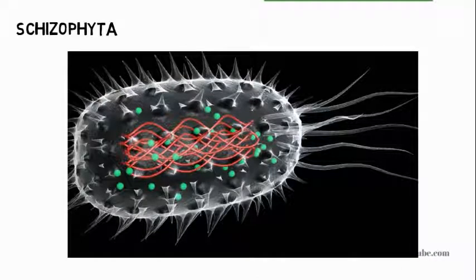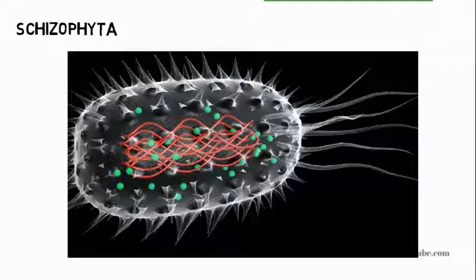Schizophyta are prokaryotic cells with no definite nucleus. They are microscopic and non-green plants. They reproduce by asexual means — that is, binary fission — and they are unicellular organisms. They lack mitochondria and have a rigid, complex cell wall. They lack cellulose but consist of polysaccharides and amino acids. An example is bacteria.